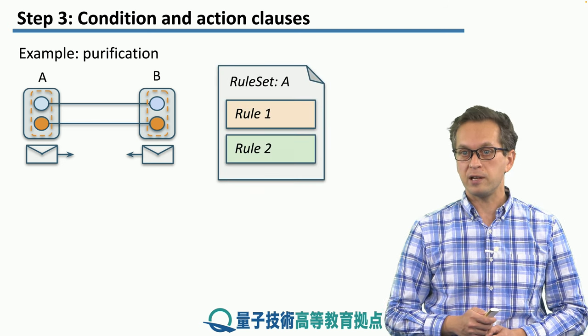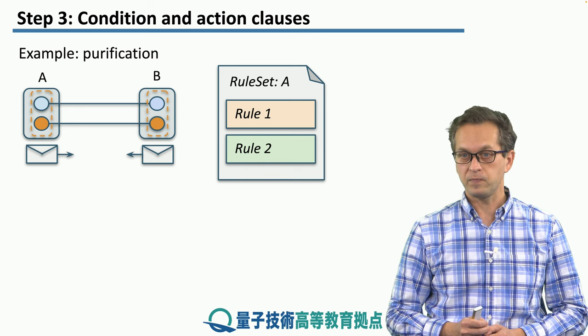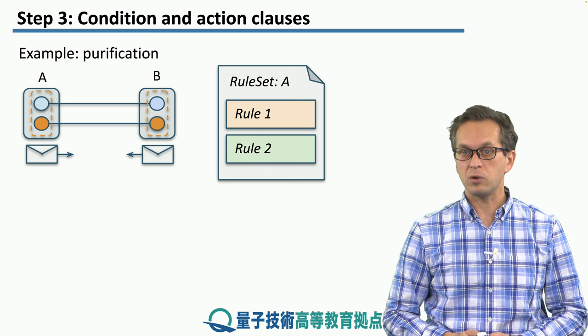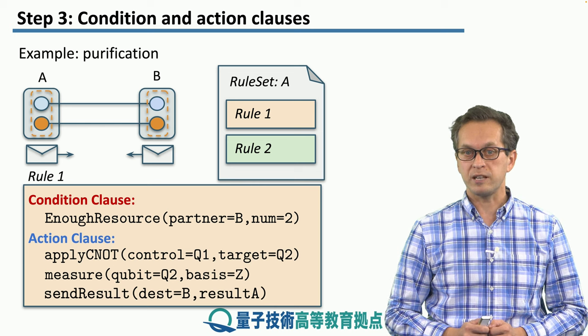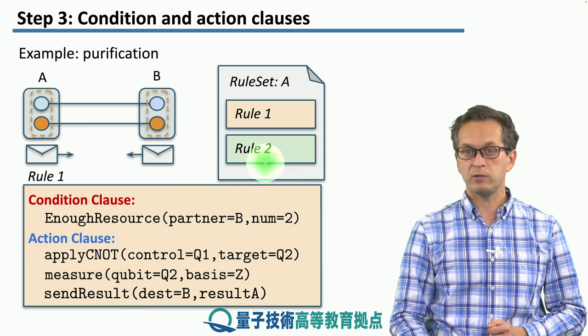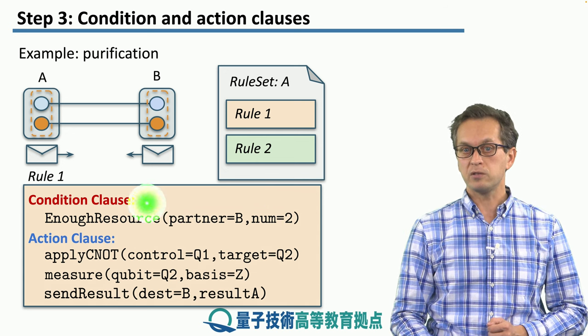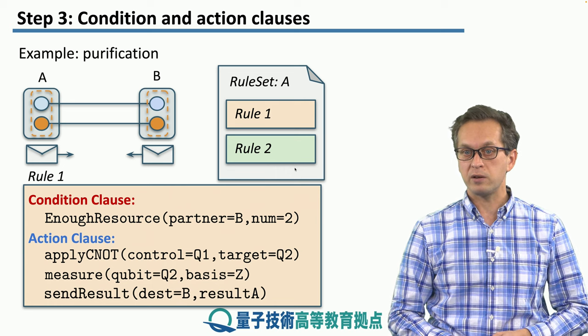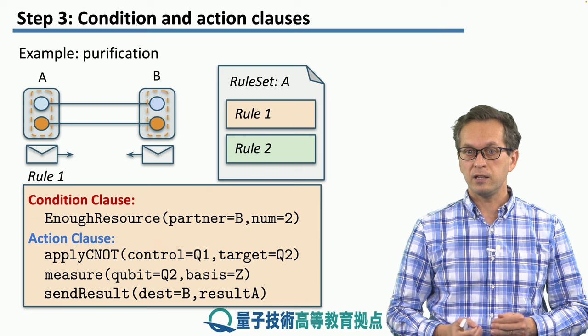This example is also slightly more complicated because we require two rules per rule set. Here, we're going to concentrate on the rule set that's in possession of node A. So, rule number one would look something like this. First, we have to check whether we have enough resources shared between A and B. So, node A is constantly checking if it's sharing at least two bell pairs with node B. Once that condition clause is satisfied, the action clause is triggered.